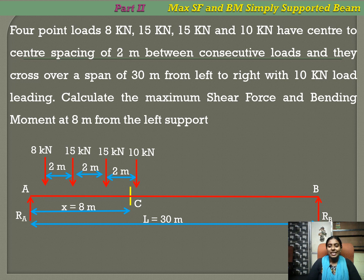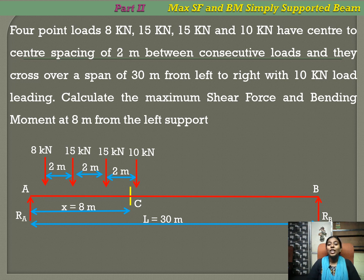This problem involves a train of concentrated loads moving from A to B. When a train of moving loads is moving from left to right, what is the maximum shear force and maximum bending moment at the section 8 meters from the left support? The section is given, and we are asked to find the maximum shear force and maximum bending moment at section C.